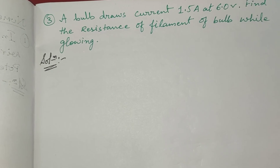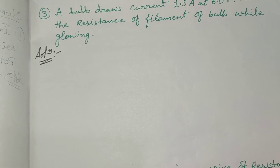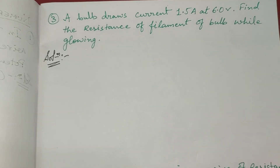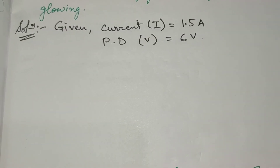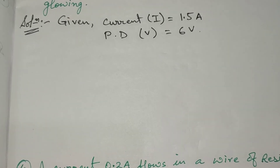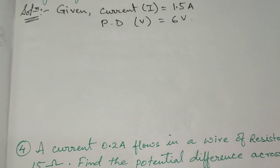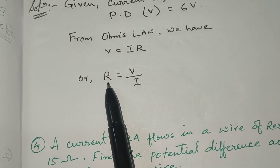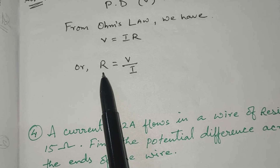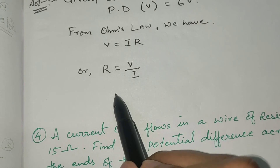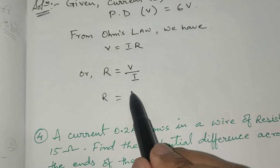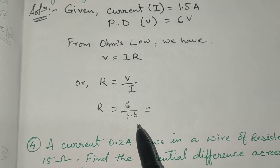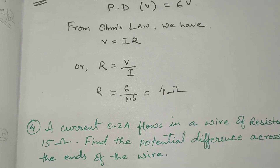Question 3 of exercise 9B says: a bulb draws current 1.5 ampere at 6 volts. Find the resistance of the filament of the bulb while glowing. Given: current is 1.5 ampere and potential difference is 6 volts. From Ohm's law, V equals IR, and since we need resistance, R equals V upon I. Substituting: R equals 6 volt divided by 1.5 ampere, so the value of resistance is 4 ohms.